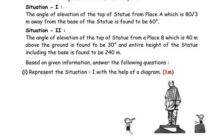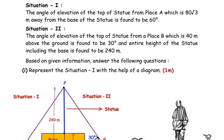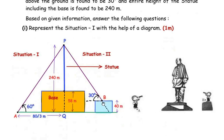The first question is to represent situation 1 with the help of a diagram. Let us first understand the entire question using the figure. Here, we have drawn the figure showing both situation 1 and situation 2. PQ represents the total height of the statue including the base, and it was given as 240 meters — that is the total height from point P to point Q.